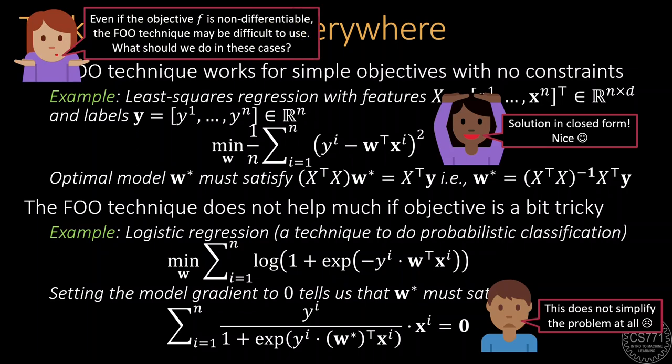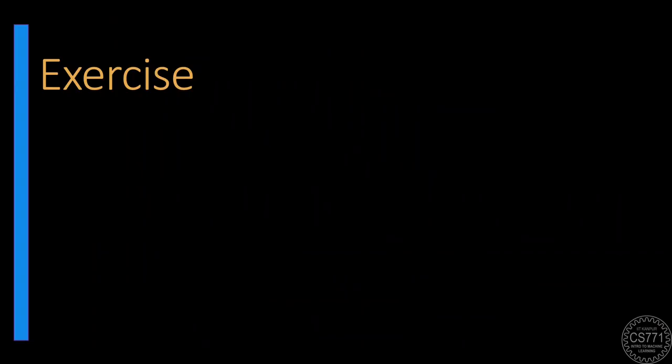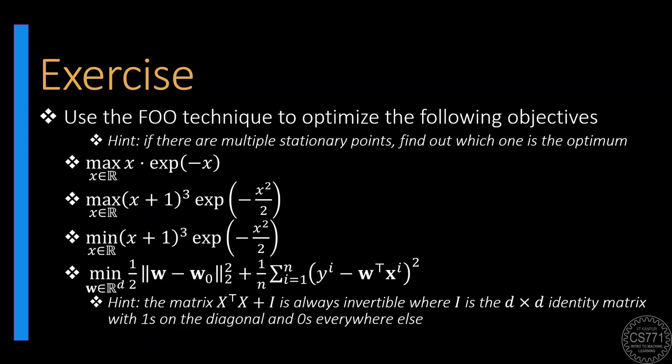FOO is similarly tricky to use if the objective is non-differentiable. To handle such cases, we must adopt a more gradual approach and not expect to get the solution in closed form right away. Before we move on to discuss these trickier cases, here are some optimization problems where the FOO technique does apply. Solve these exercise problems to develop your intuition on when it is useful to apply the first order optimality technique.